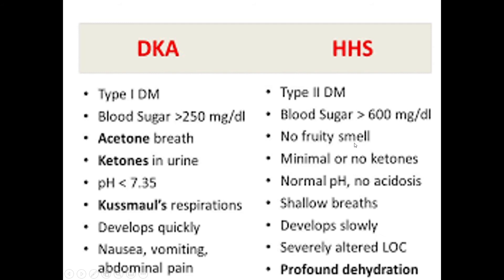Ketone bodies are present in urine in DKA; minimal or absent in HHS. Kussmaul respiration — a specific breathing pattern — occurs in DKA due to hydrogen ion release from ketone bodies stimulating the medullary chemoreceptive area and dorsal group of neurons, causing hyperventilation. In HHS, breathing is shallow. DKA develops quickly while HHS develops very slowly. In DKA there is nausea, vomiting and abdominal pain; in HHS there is profound dehydration.